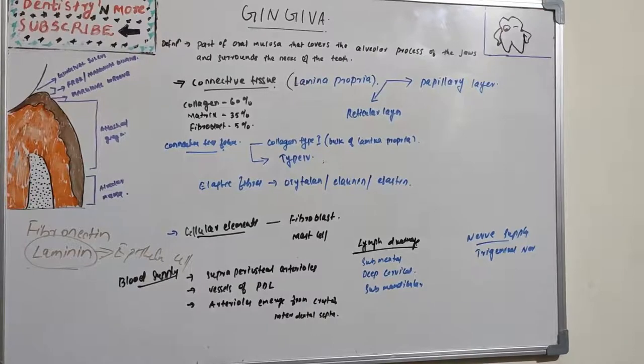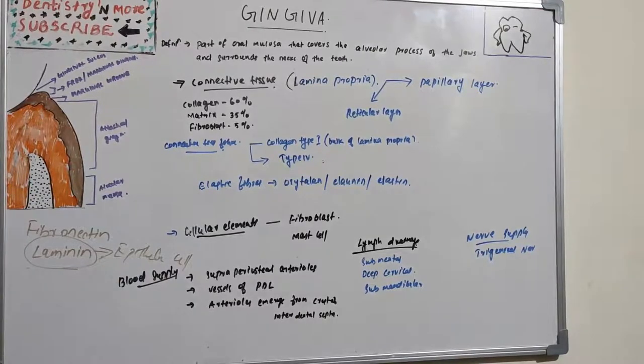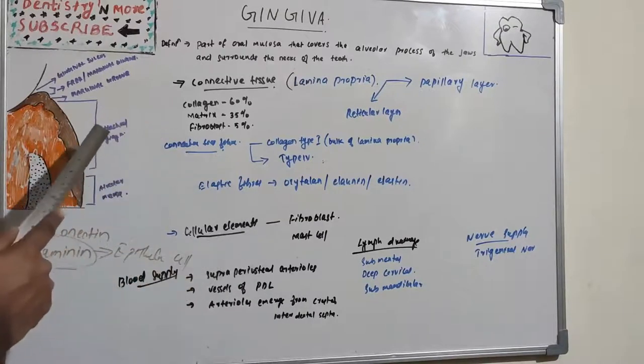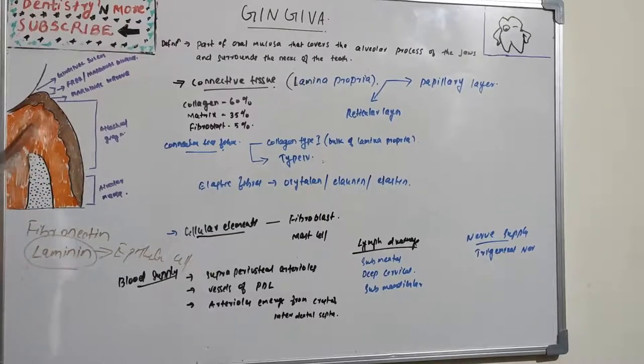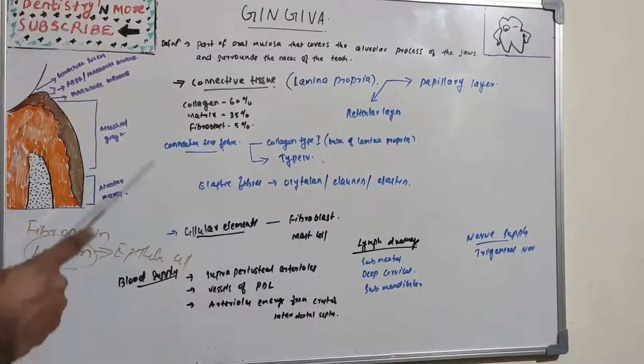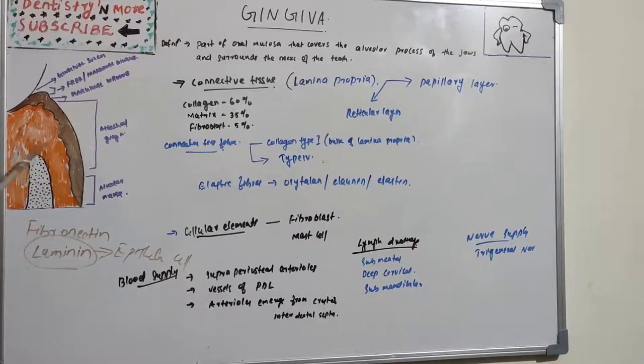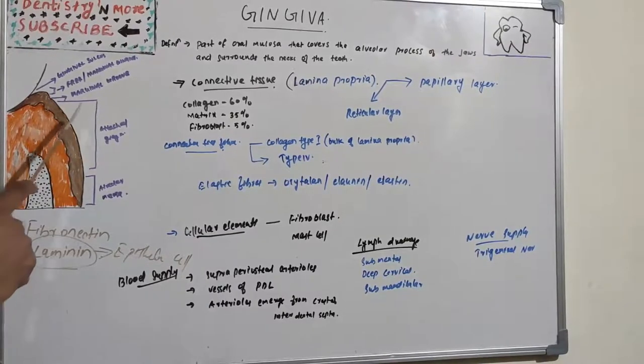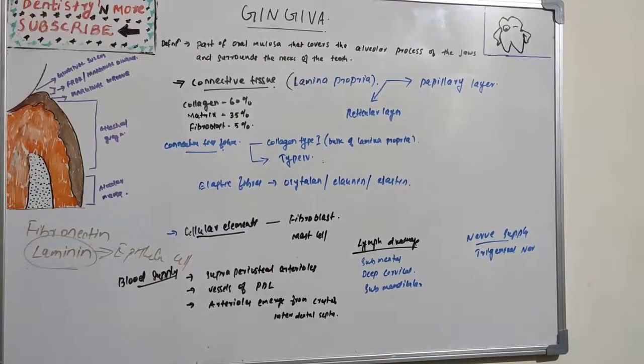The blood supply of gingiva is basically from three sources: one is supraperiosteal arterioles along the facial and lingual surface of the alveolar bone, from which capillaries extend along the sulcular gingival epithelium and between the rete pegs of external gingival surface. Next we have vessels of periodontal ligament which extend into the gingiva and anastomose with capillaries in the sulcus area. And third one is arterioles which emerge from the crest of the interdental septa.